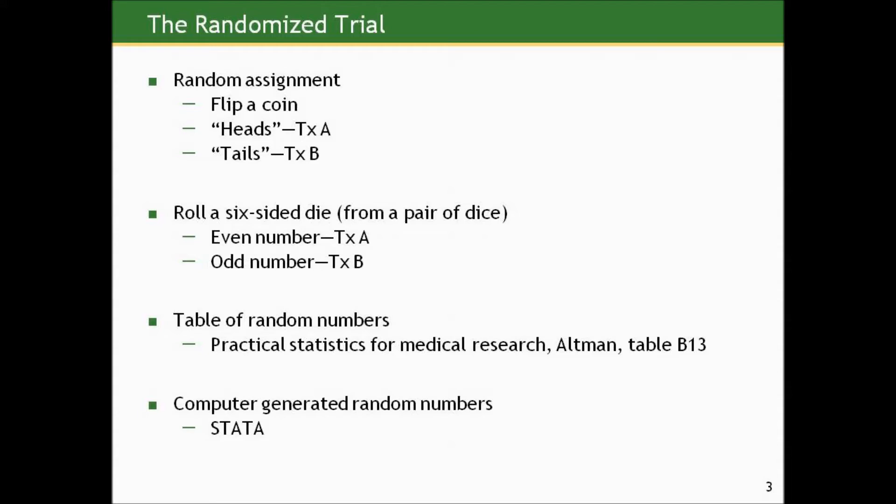Well, here are some examples. We could flip a coin. Assuming it's a fair coin, you haven't filed down one of the sides so there's a 50-50 chance over time of getting heads or tails. We could flip it and if we get heads, we might put the person in treatment A. If we get tails, we might put them in treatment B.